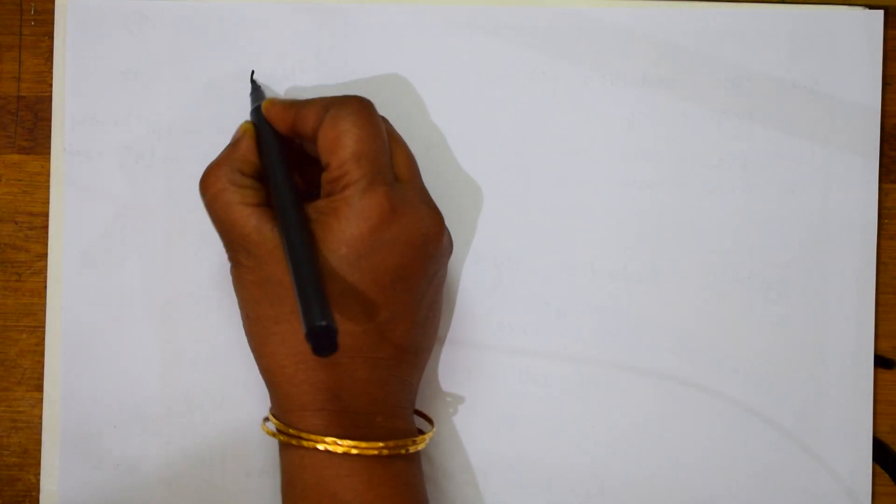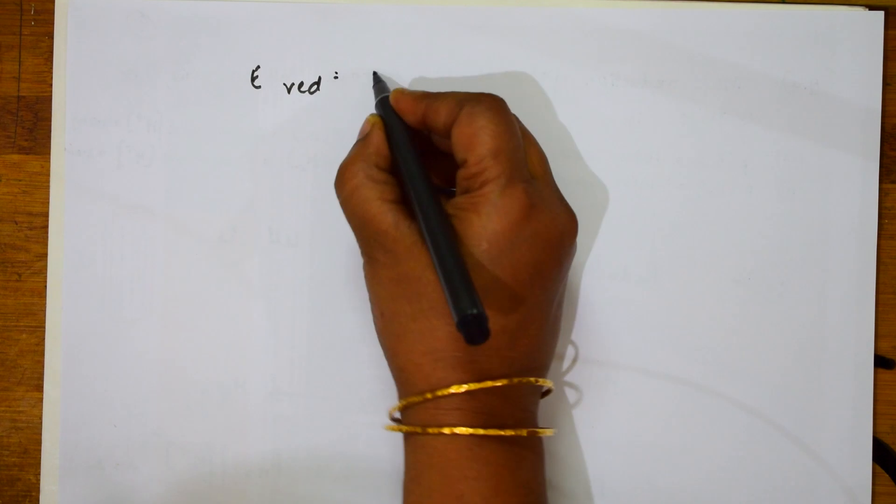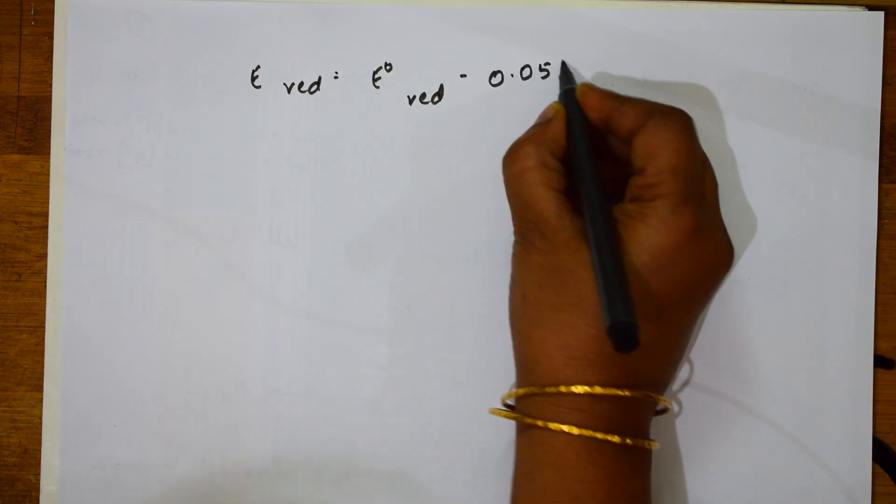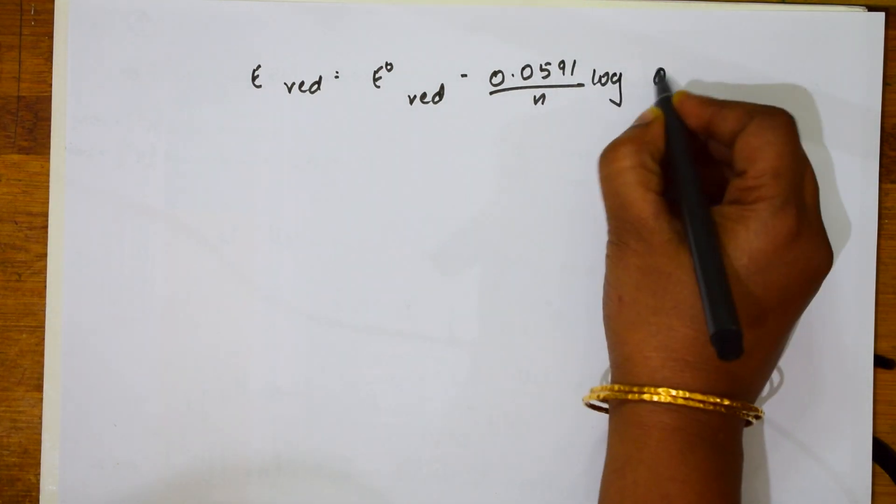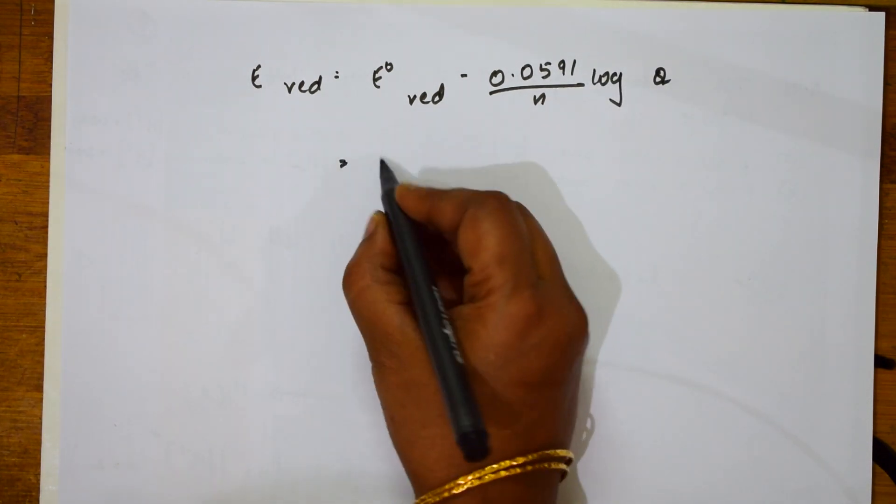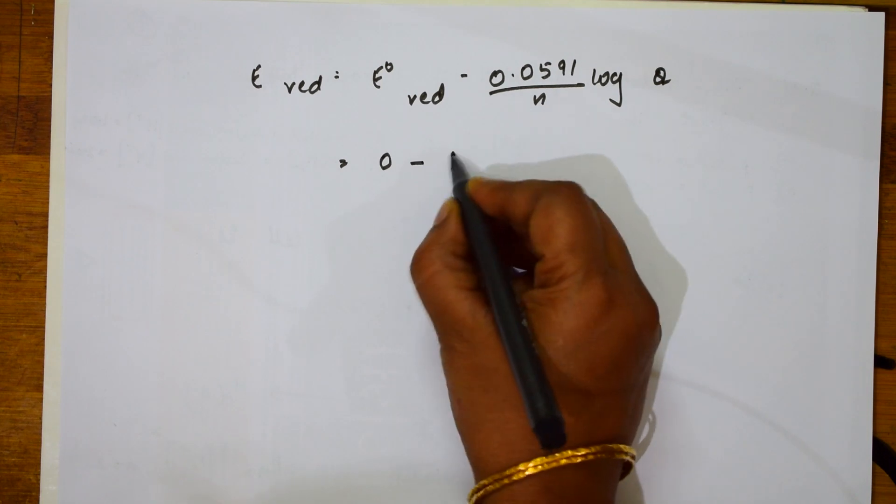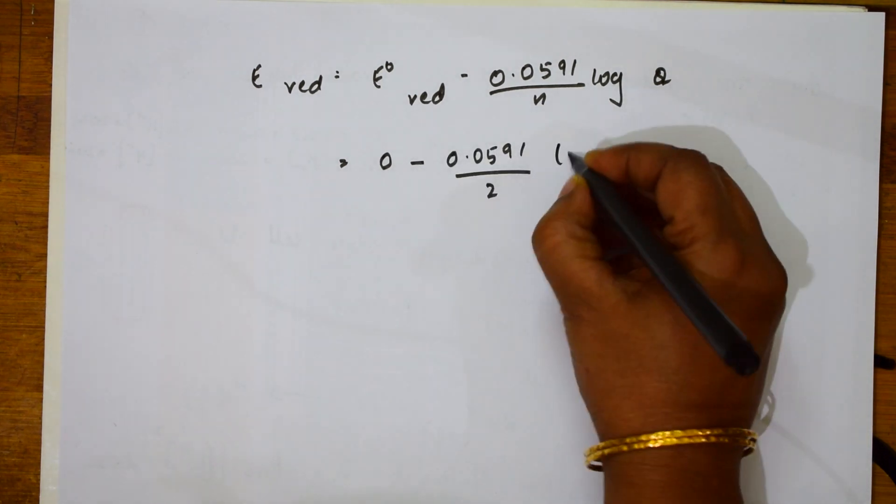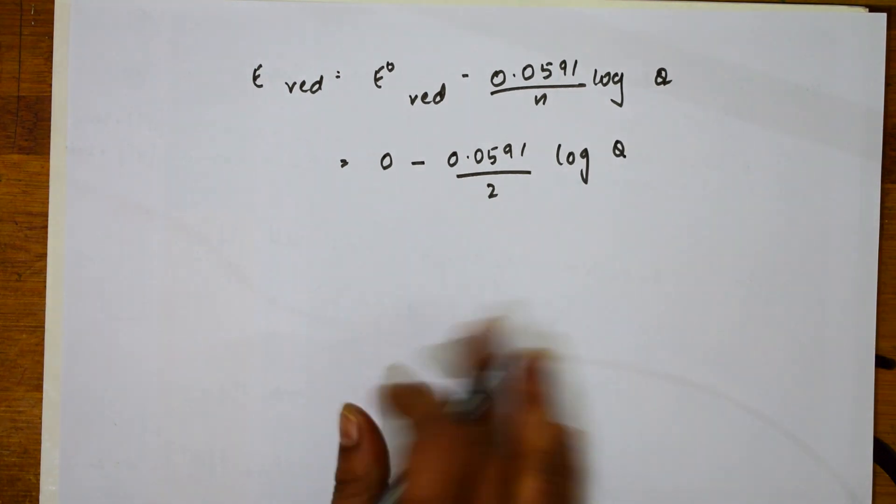Now, further I have to substitute and find out the value. E reduction is equal to E° reduction minus 0.059 by N log Q. So what is this value for hydrogen? We call it 0, 0 minus 0.059, 1 by 2, and log Q.